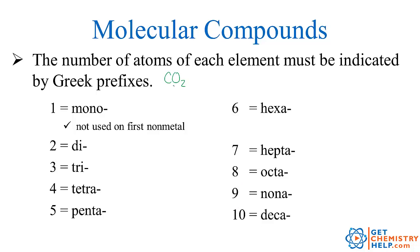So again CO2. Well there's only one carbon, but notice it says you don't use mono on that first non-metal, so we just say carbon. But the second one that we change to ide, oxide. Well there's two, so we would use di. So dioxide.